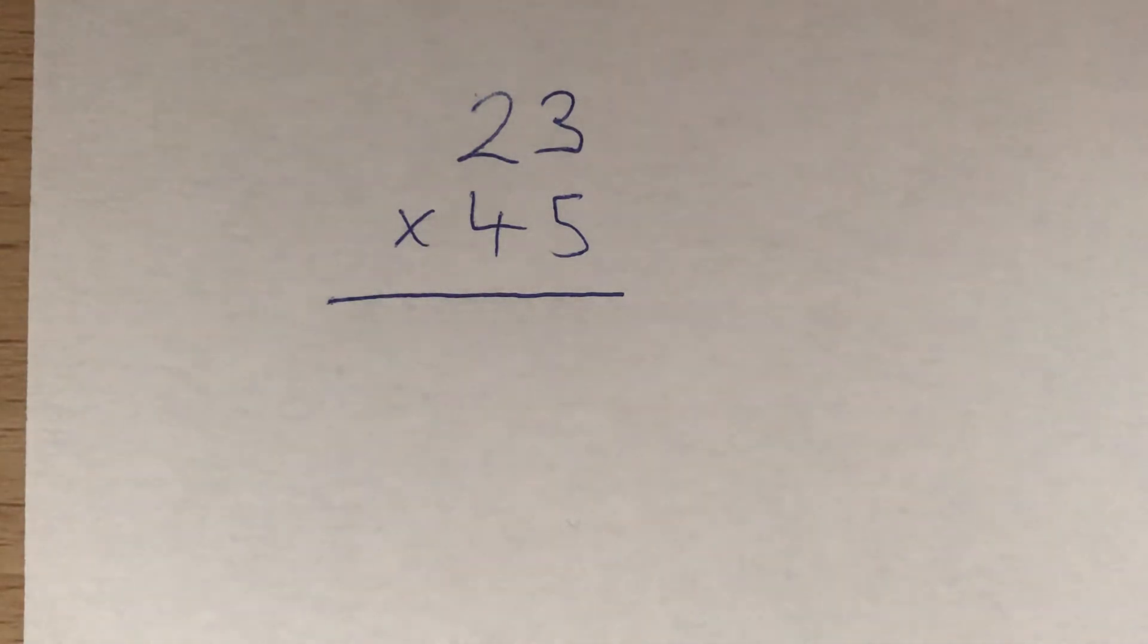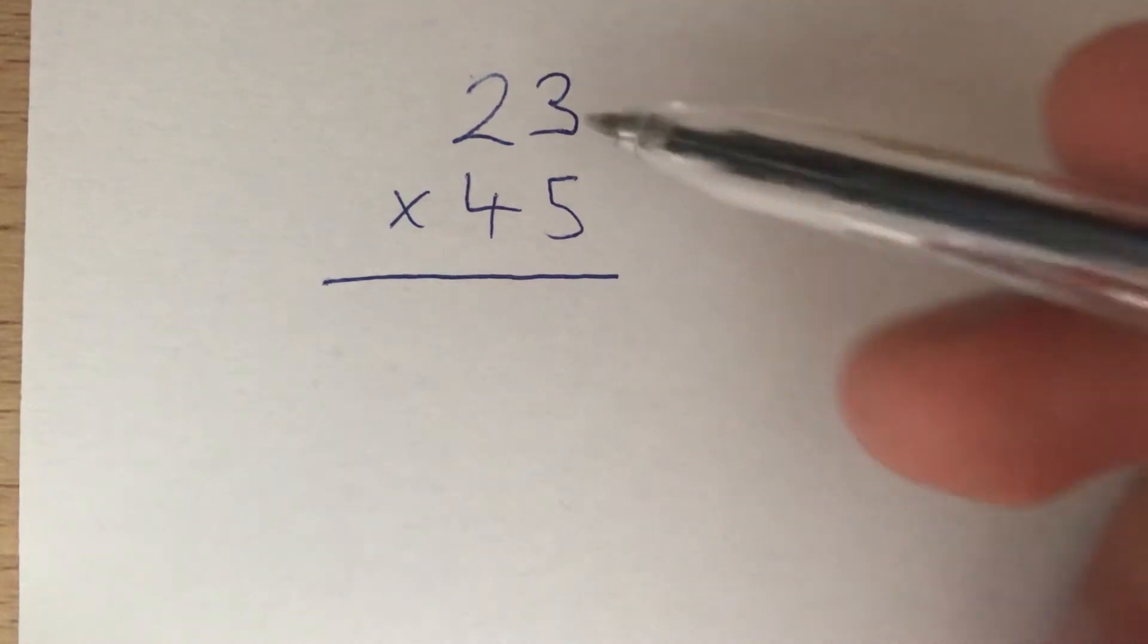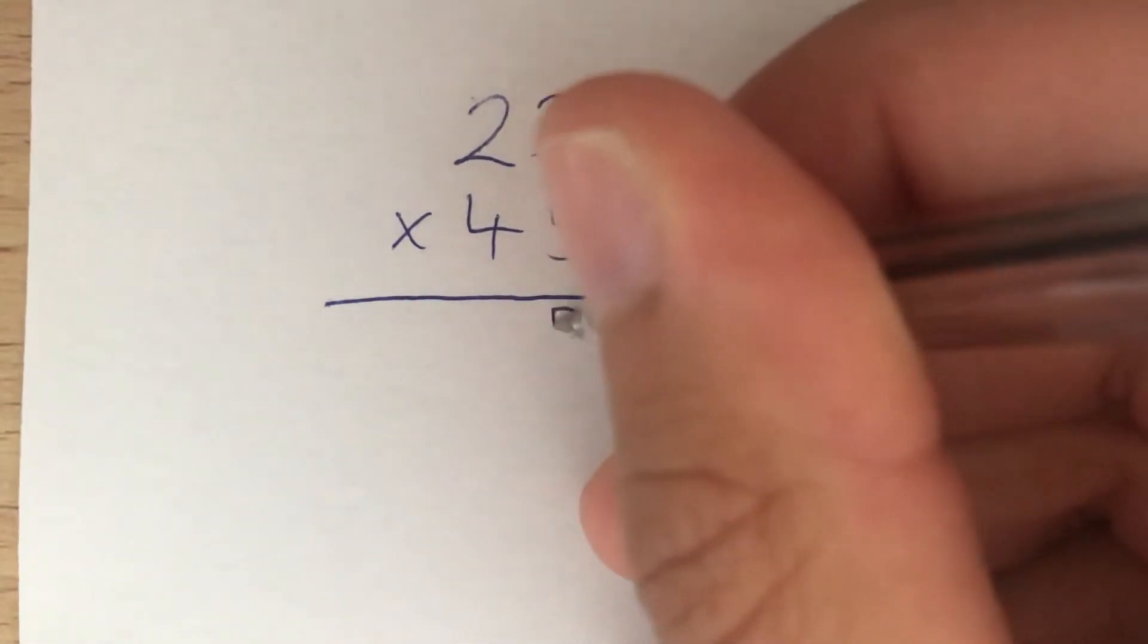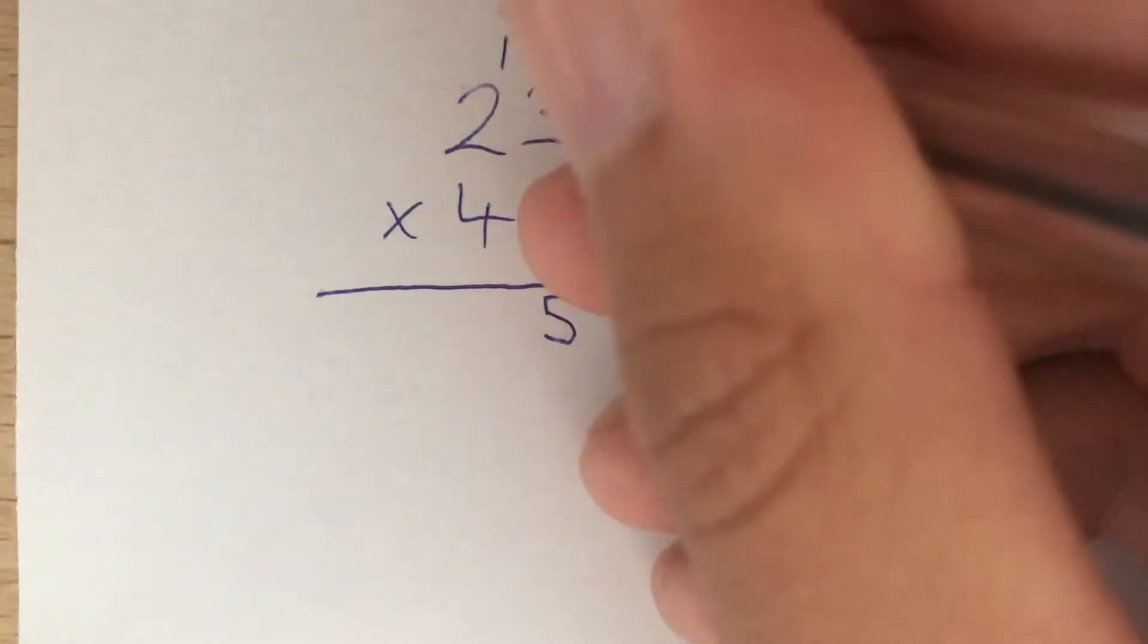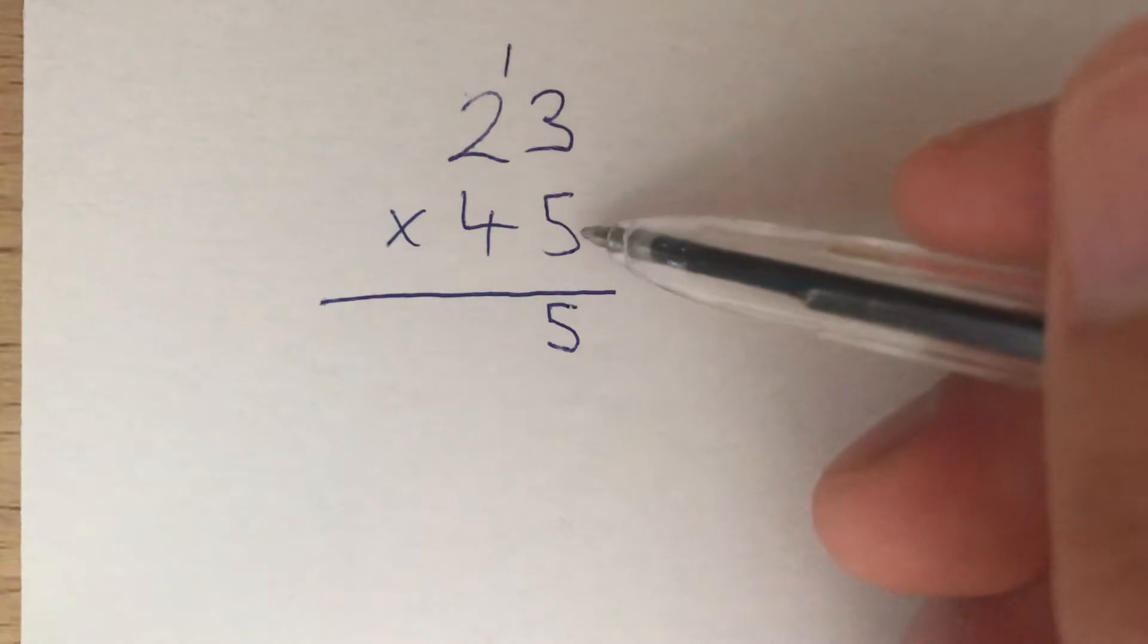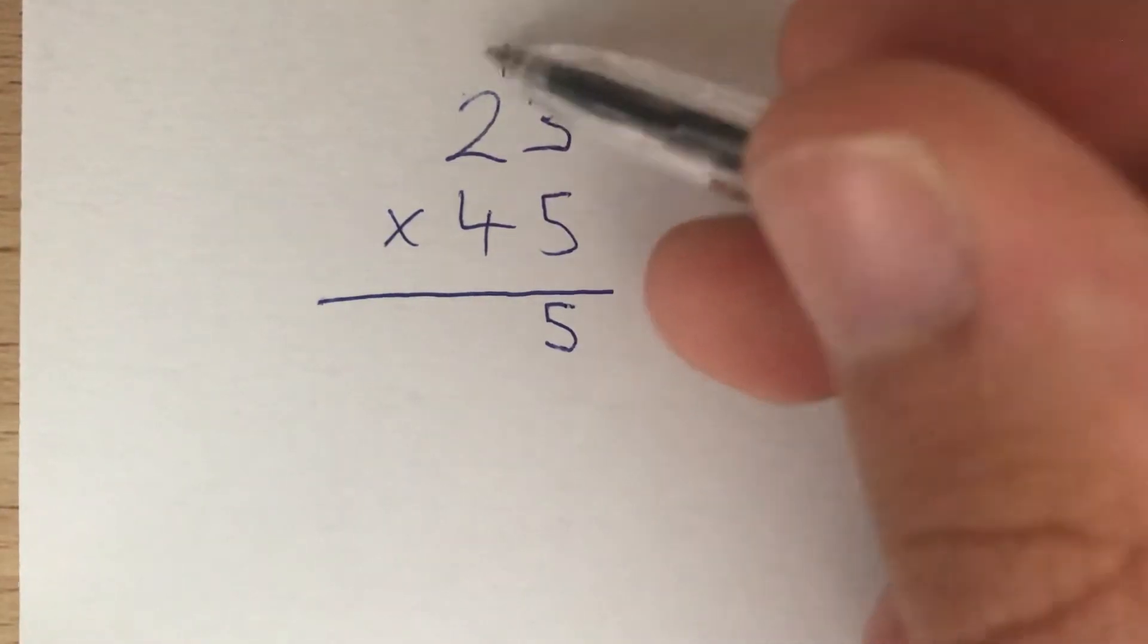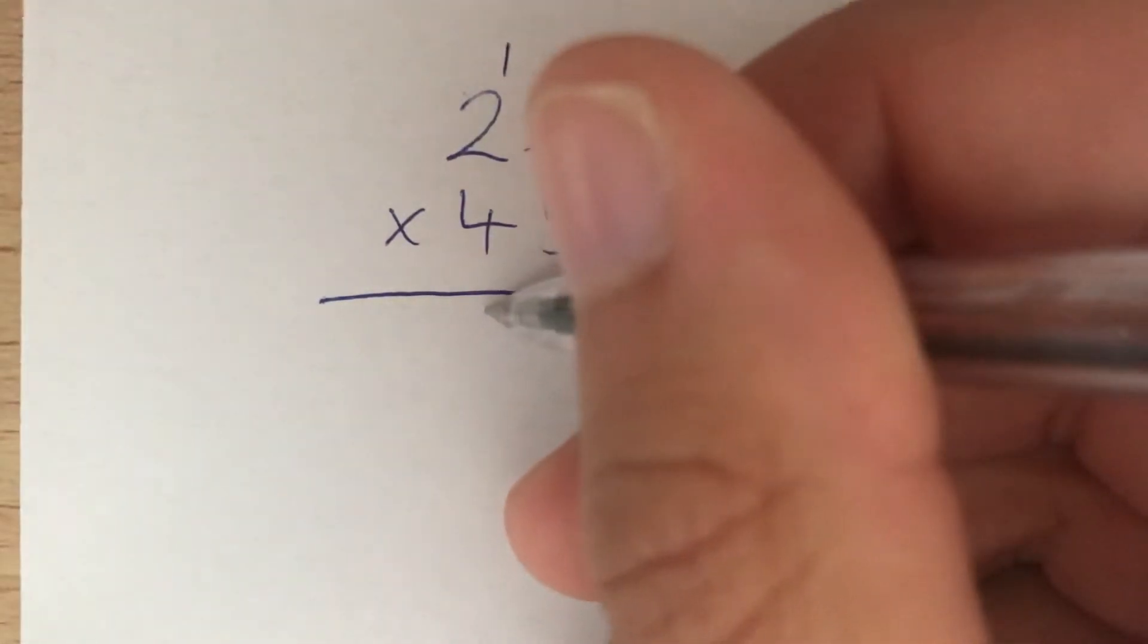First, we multiply 5 by 23. Start with 5 times 3, which gives us 15. We put the 5 down here and carry the 1 from the 10. Now we do 5 times 2, which gives us 10. We add on the 1 that we've carried over to get 11.